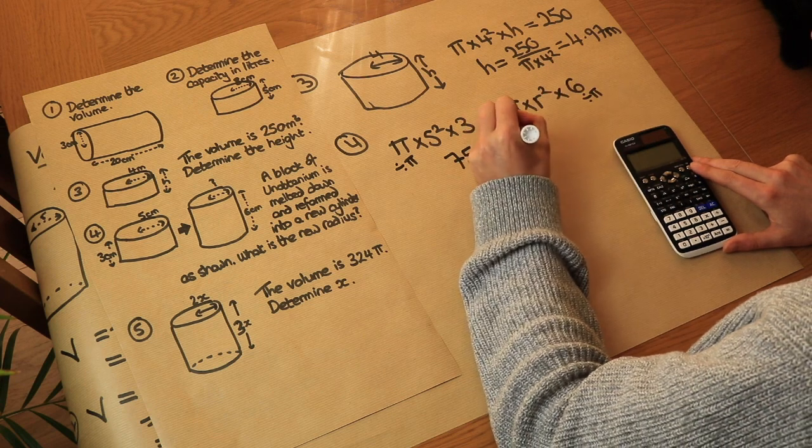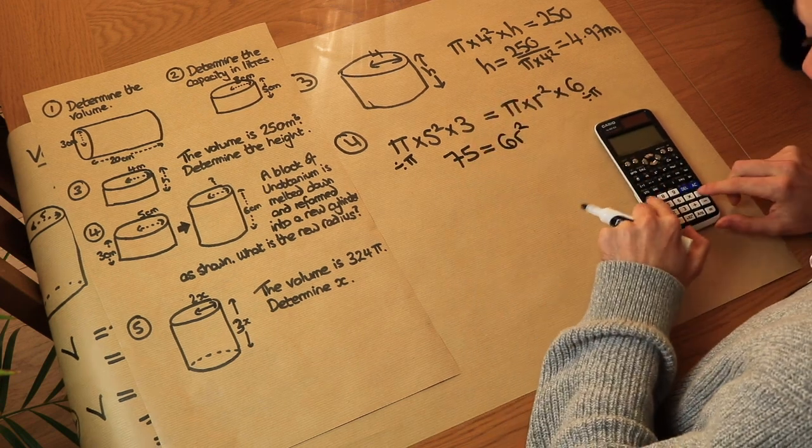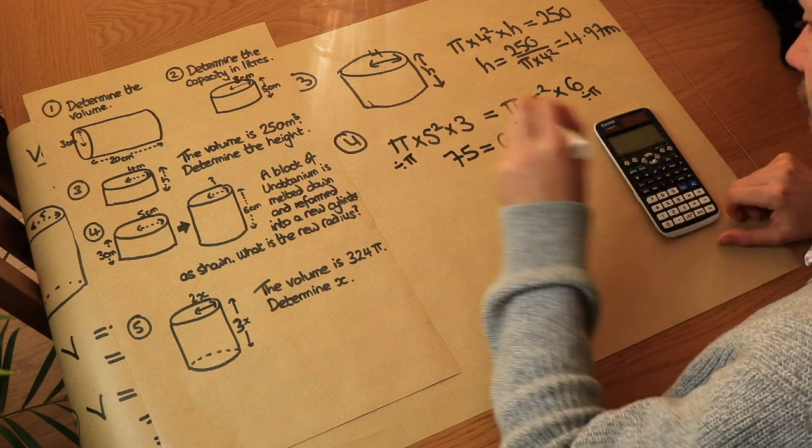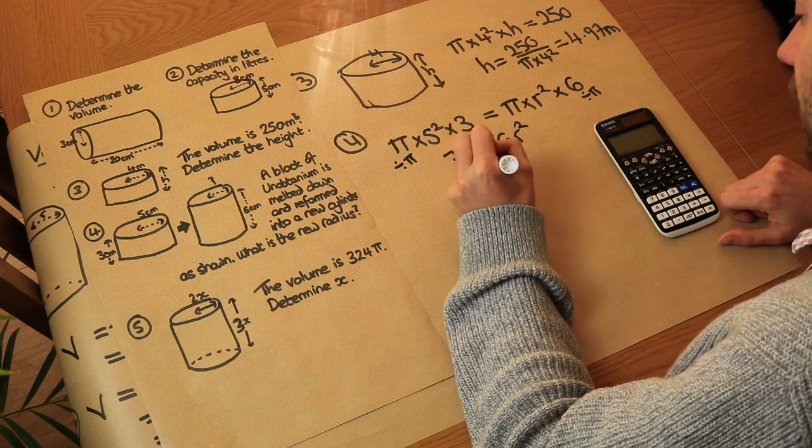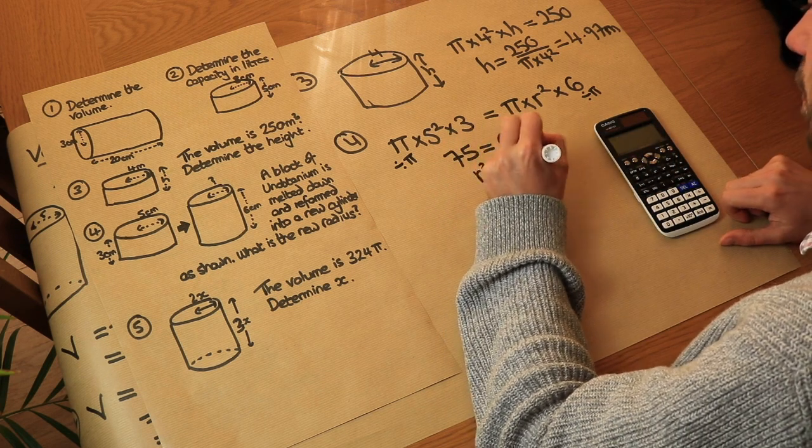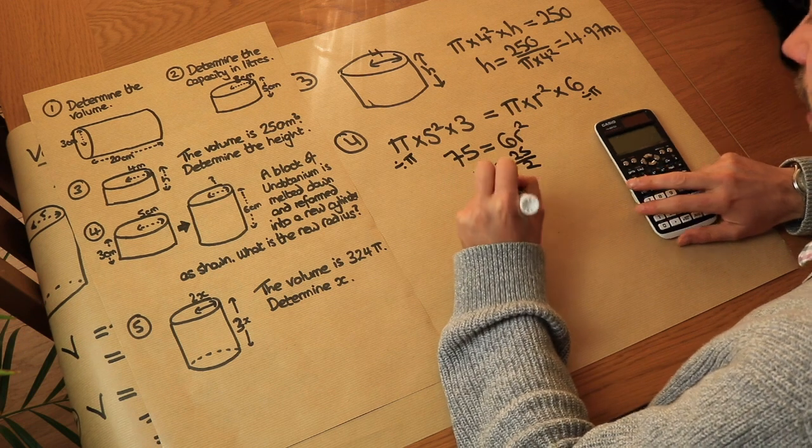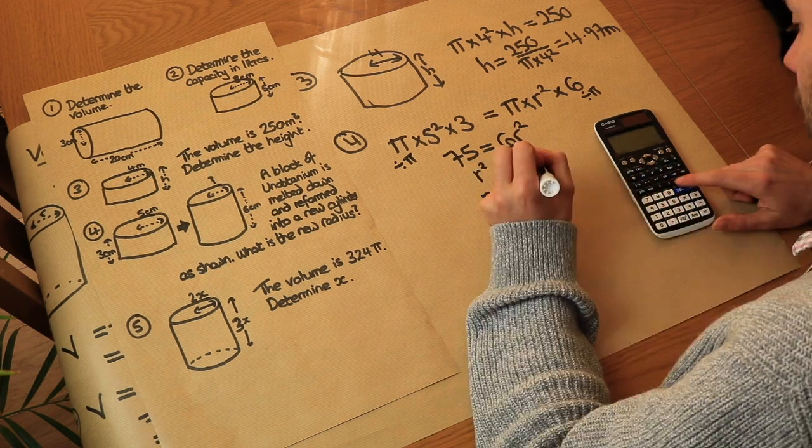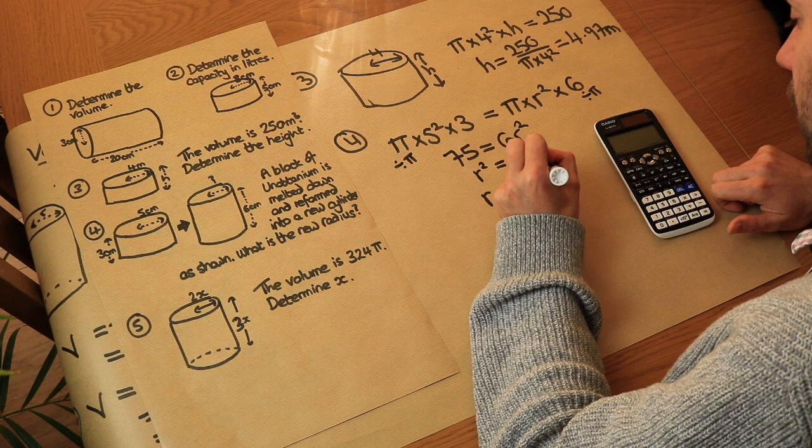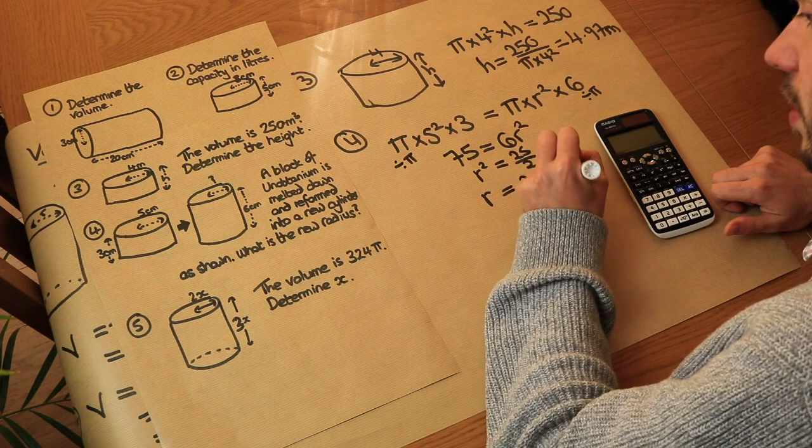If we divide both sides by 6, we get r squared is equal to 25 over 2, and that means r is equal to, as a decimal, 3.54 centimeters.